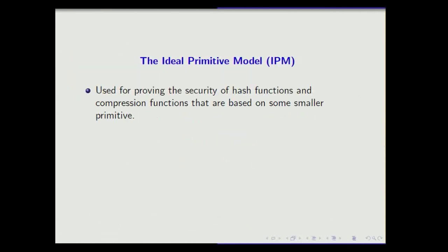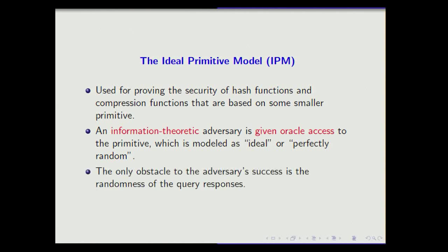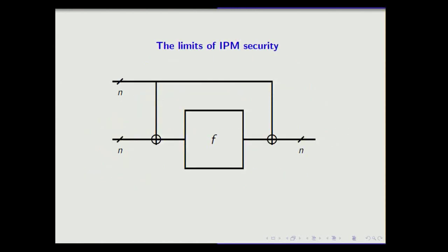First, a word about the ideal primitive model. We use it for proving security of hash functions or compression functions that depend on a smaller primitive. We consider an information-theoretic adversary who can query the smaller primitive, and we count the number of queries they make in order to break the construction — for example, to find a collision. The only challenge is the randomness that comes from these queries, so we can't predict what's going to happen.